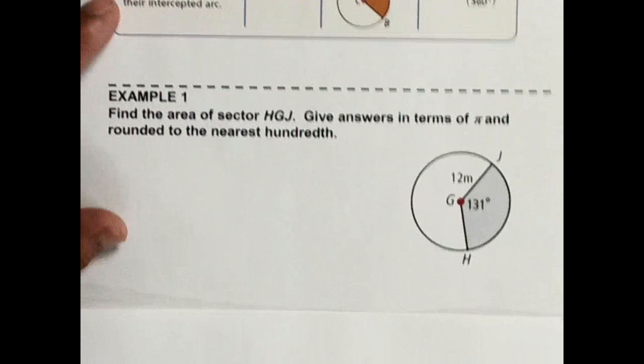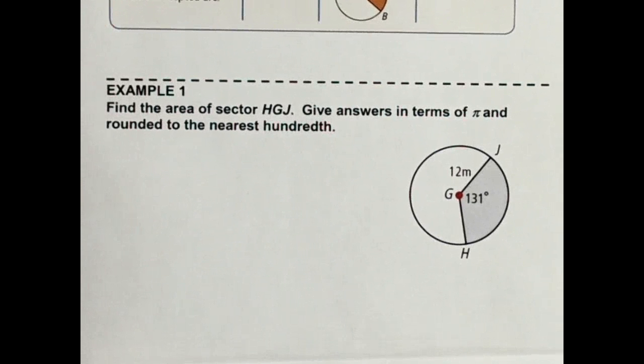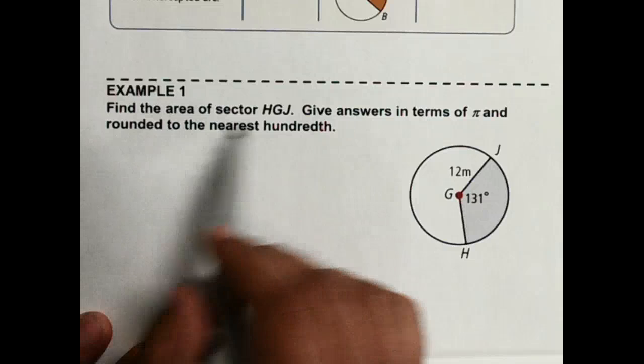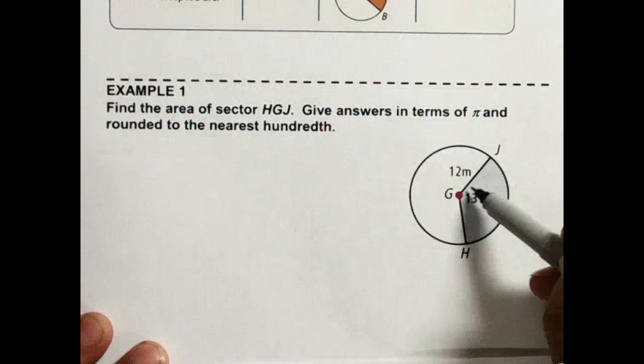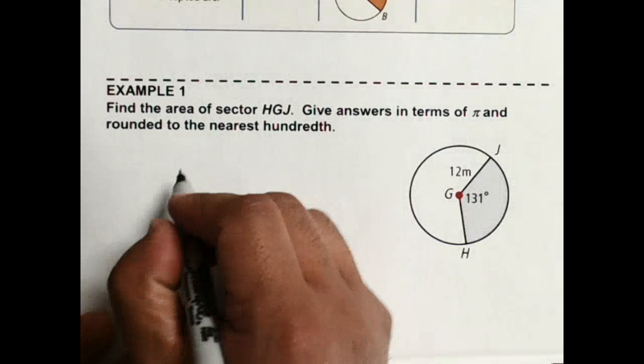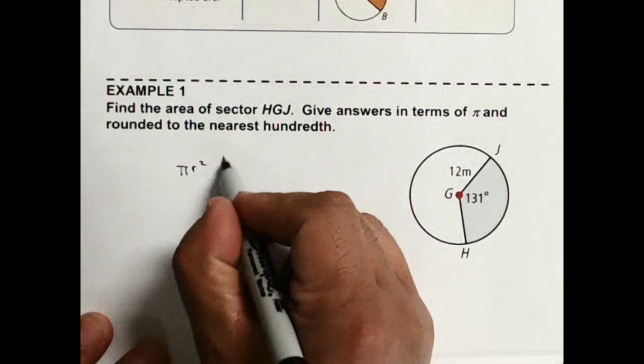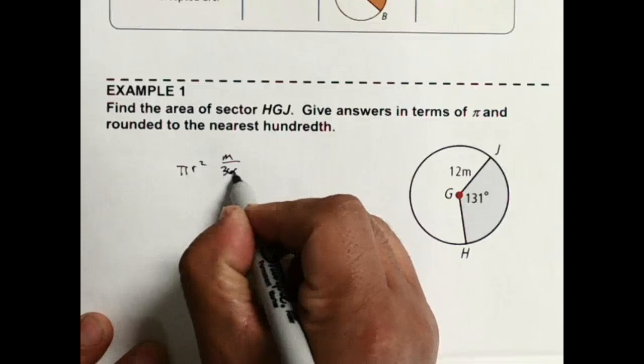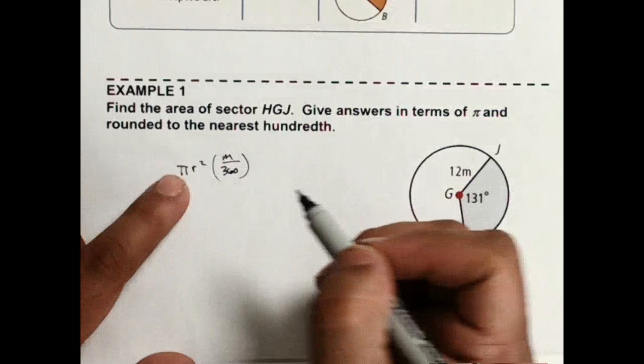So let's look at a problem right here real quick and just go ahead and get that. So the area of a sector, so I want this section H, G, J, that piece. So I want to do pi R squared like normal, but then I want the angle divided by 360 or over 360.